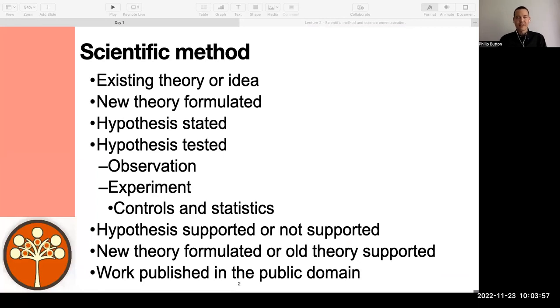So the scientific method is fundamental to all areas of science and is how science develops and progresses, basically how science advances. It all starts with an existing theory or idea that is understood that a lot of people believe, or maybe not a lot of people believe. But whatever the case, you've got an existing idea or theory, a school of thought, on a particular topic. Now, somebody may have an idea that maybe it's actually like this or like that. So that's where a new theory is formulated.